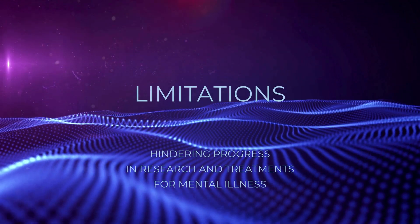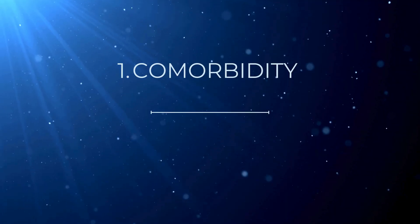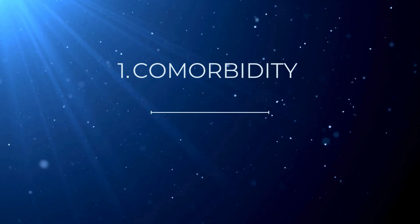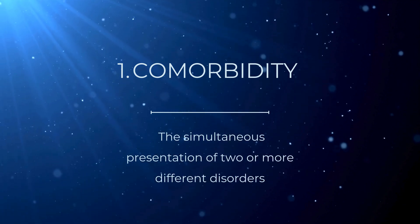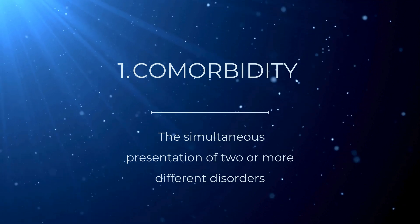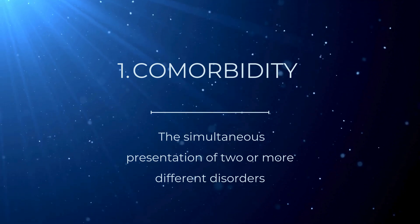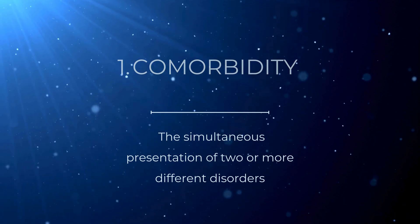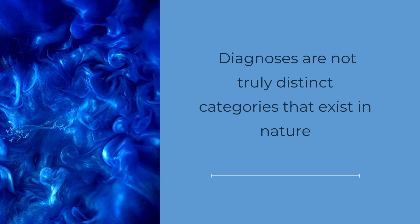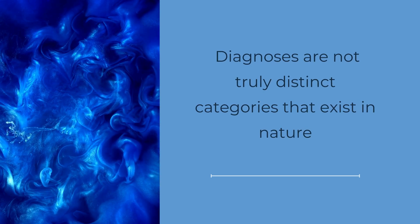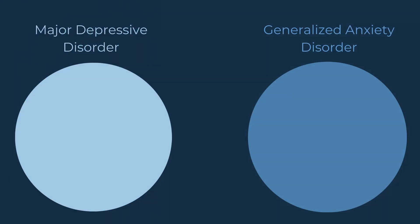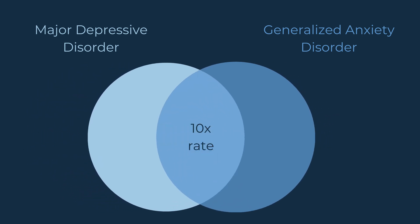Some of the prominent limitations include co-morbidity. This refers to the simultaneous presentation of two or more different disorders. The rates of co-morbidity far exceed chance levels, indicating that the diagnoses are not truly distinct categories that exist in nature. For instance, individuals with major depressive disorder have approximately 10 times the rate of co-occurring generalized anxiety disorder that would be expected by chance.